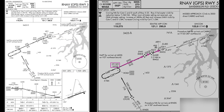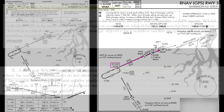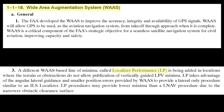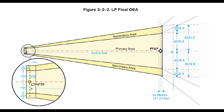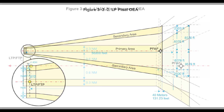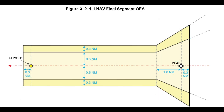The R-Nav runway 05 approach has some quirks worth noting during preflight planning and briefing in the air. First, you can fly to LP minimums with a WAAS-capable navigator that has the appropriate system software, like my GTN 750XI. LP means localizer performance, and as the name implies, the final approach segment narrows like a localizer, funneling you to the runway and avoiding obstacles that impinge on the constant-width final approach segment established for LNAV-only minimums, as shown in TERPS.